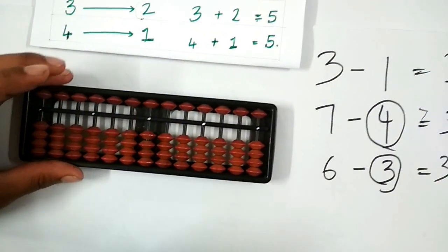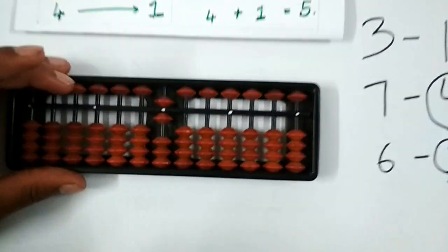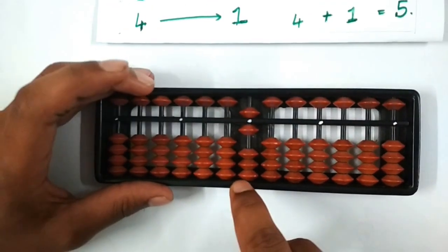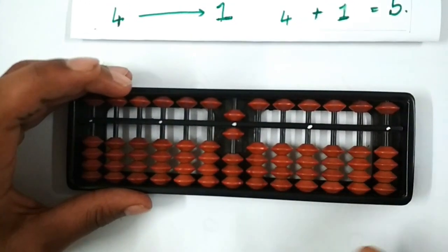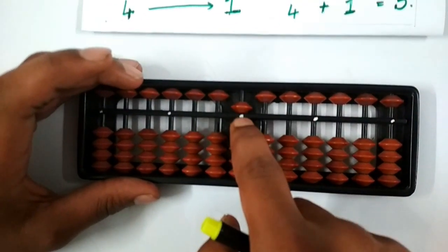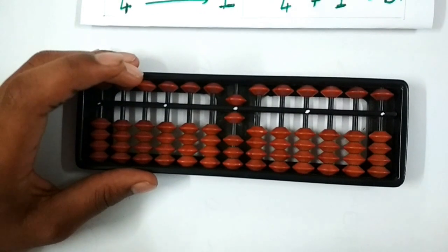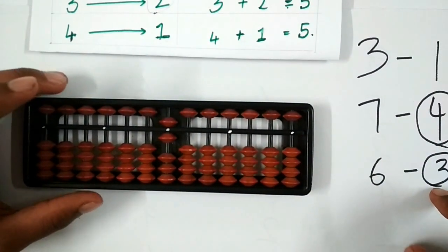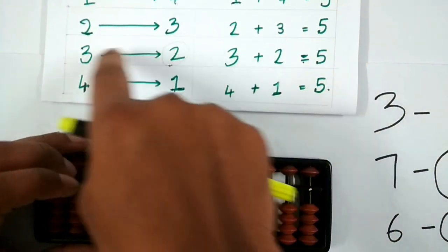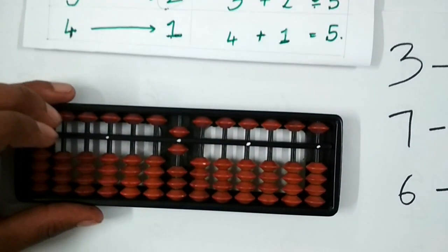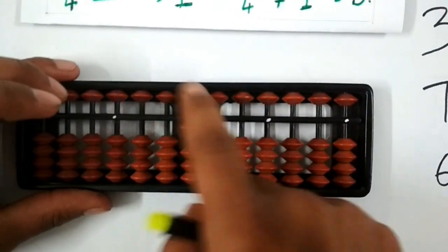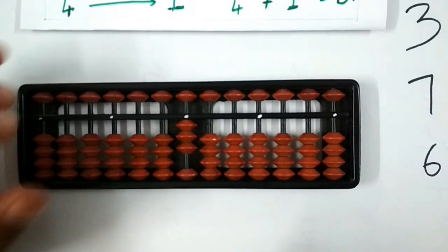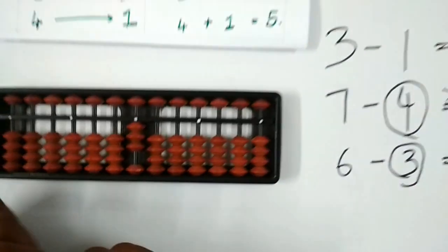Let us do 6 minus 3 again. Place 6 on the abacus and check whether there are enough beads to subtract 3 at the lower end. We see that we have only 1 bead. To subtract 3 we need to know who the friend of 3 is — the friend of 3 is 2. So we remove 5 first, then add 2 at the lower end, and we get the answer as 3.